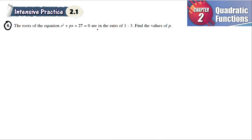The roots of the equation are in the ratio of 1 to 3. Find the values of p. Since the ratio is 1 to 3, we know that one root is 3 times the other root. If we let it be alpha, then this one is 3 alpha. The roots of the equation, so here we have x squared.